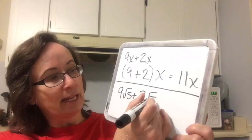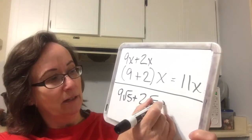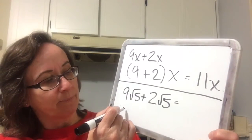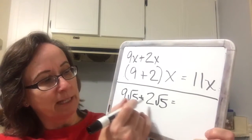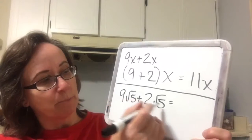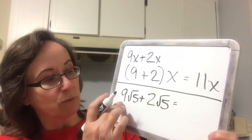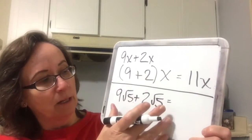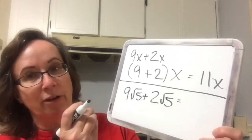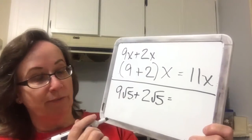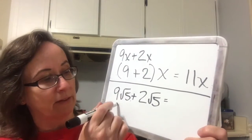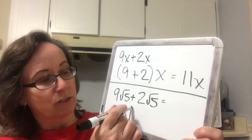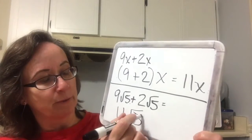Down here, we're going to have the 9 plus 2 since they're both square root of 5. So we can, just like we did there, pull the square root of 5 out, add the two coefficients together, and get 11 square root of 5.